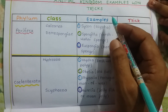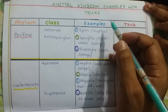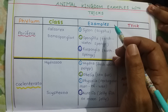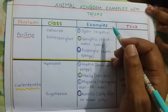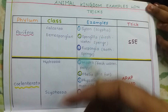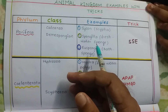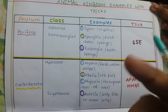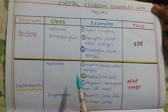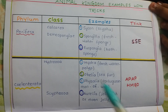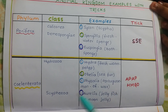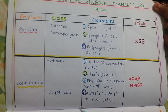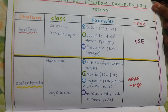Hi students, let us learn animal kingdom examples with tricks. It is very difficult for biology and NEET-oriented students to remember all the examples, including Botany and Zoology. If you keep some tricks, it is easy for you to remember and you can maximize your score in NEET exam.